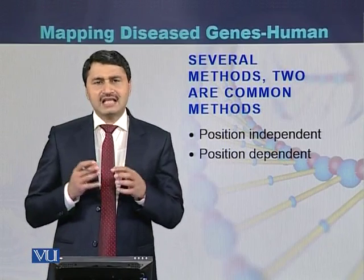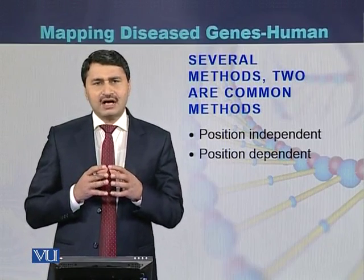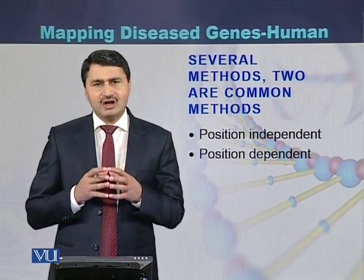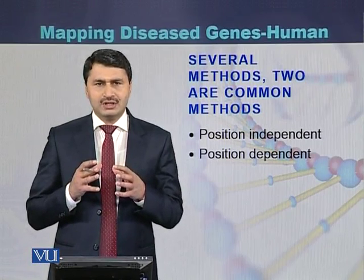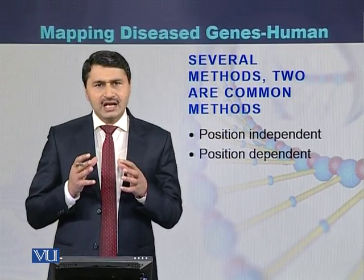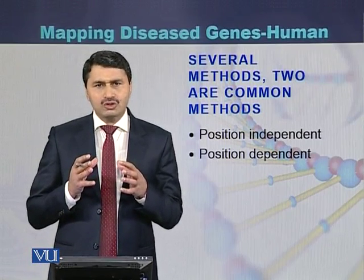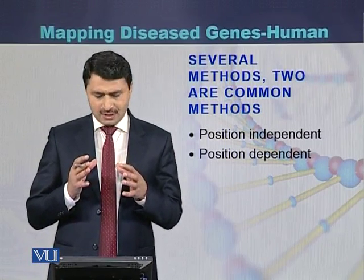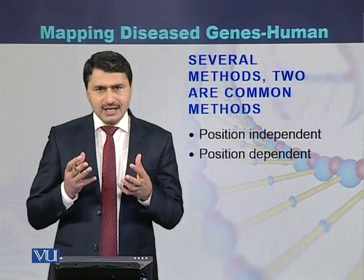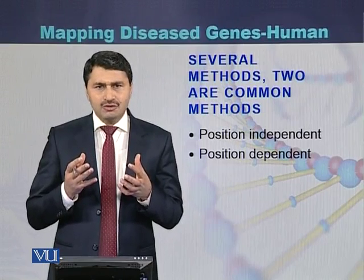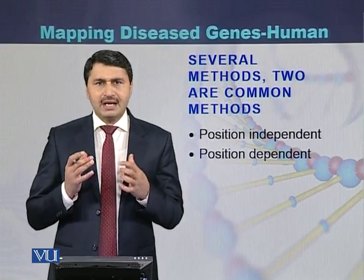There are several methods for identification of disease genes in humans, but there are two most common methods: position independent and position dependent.